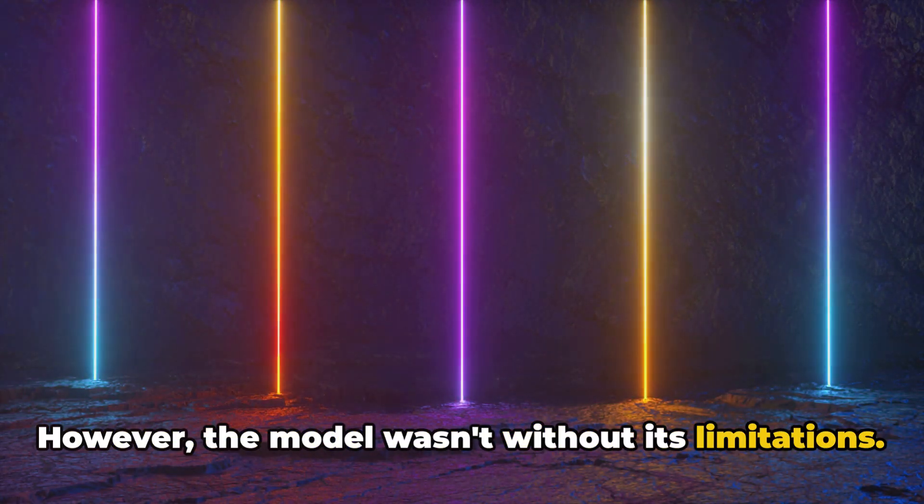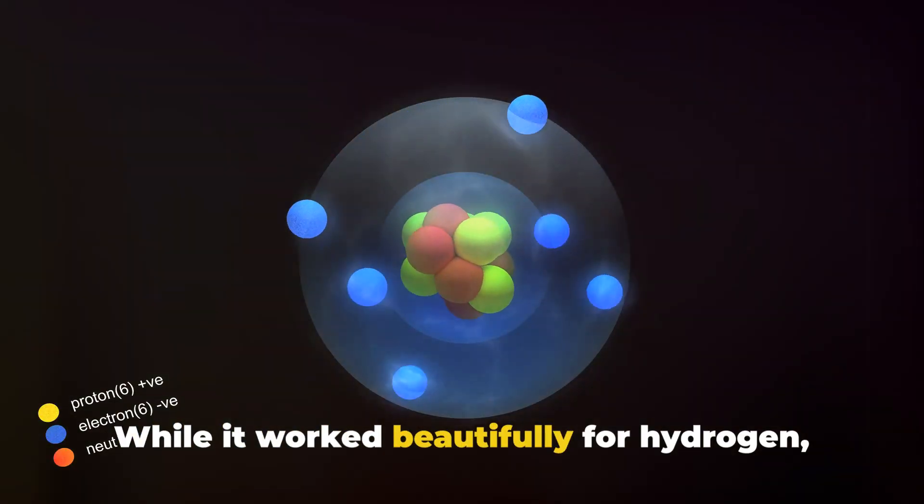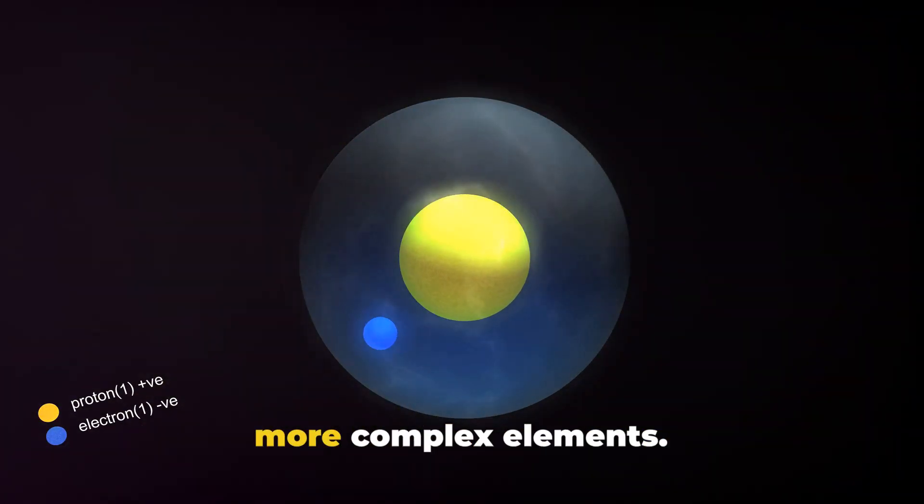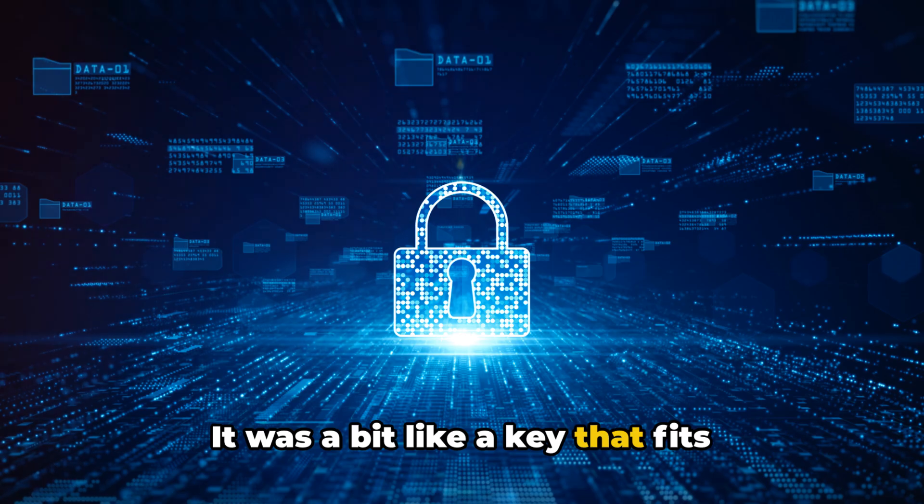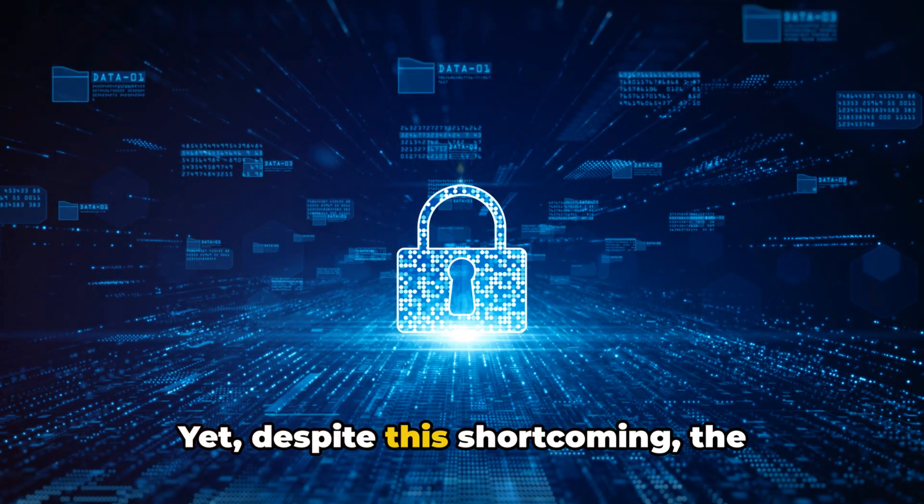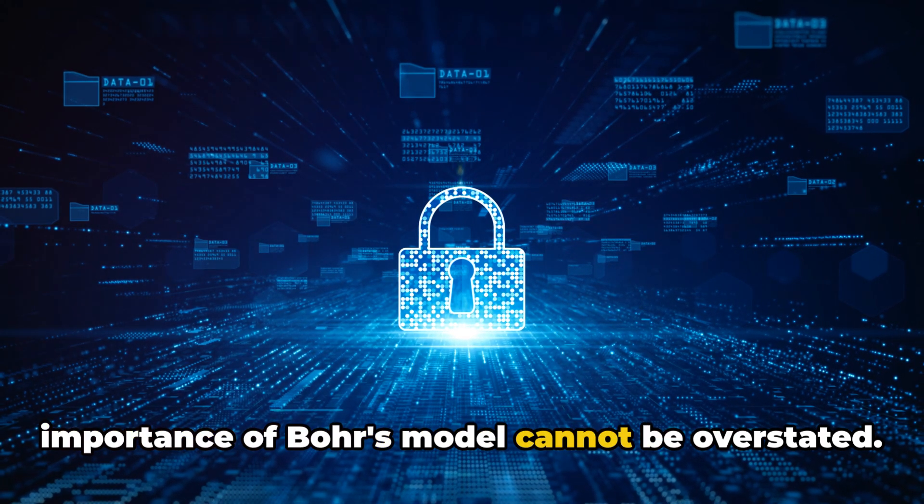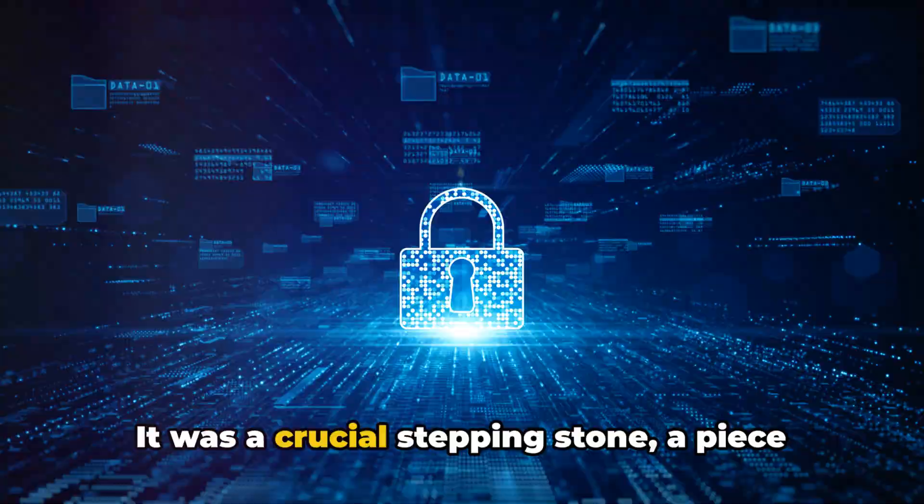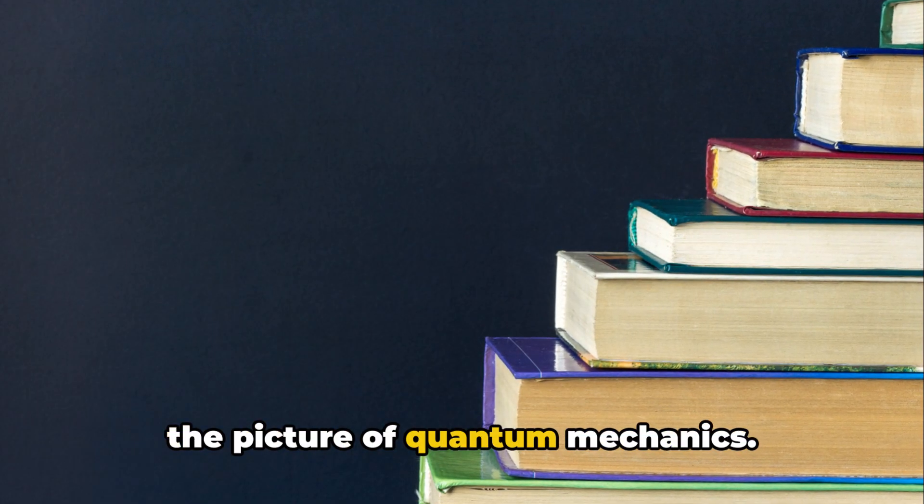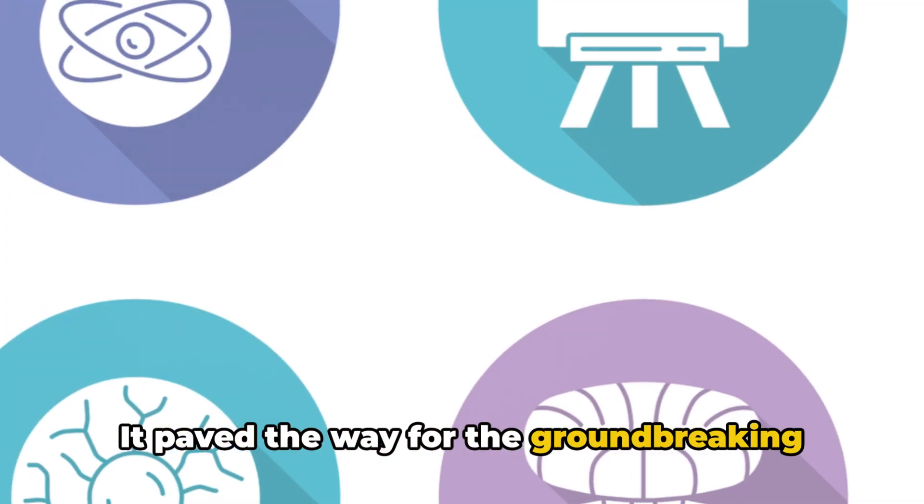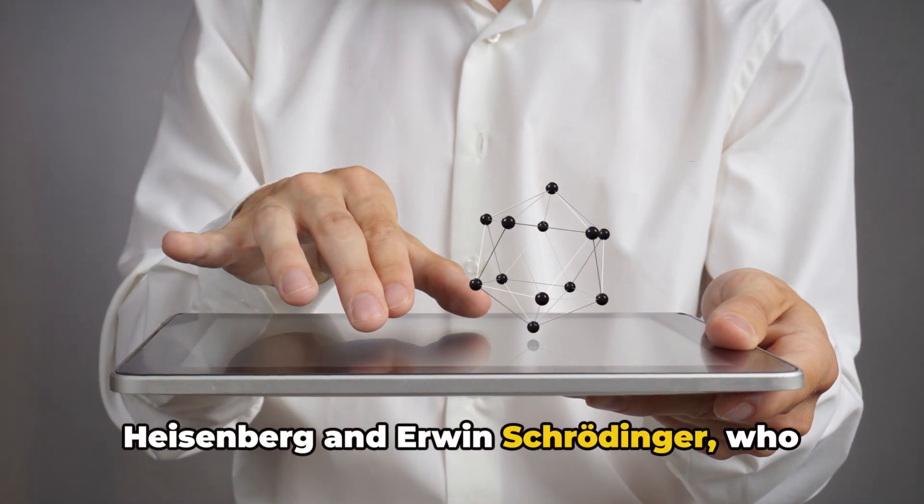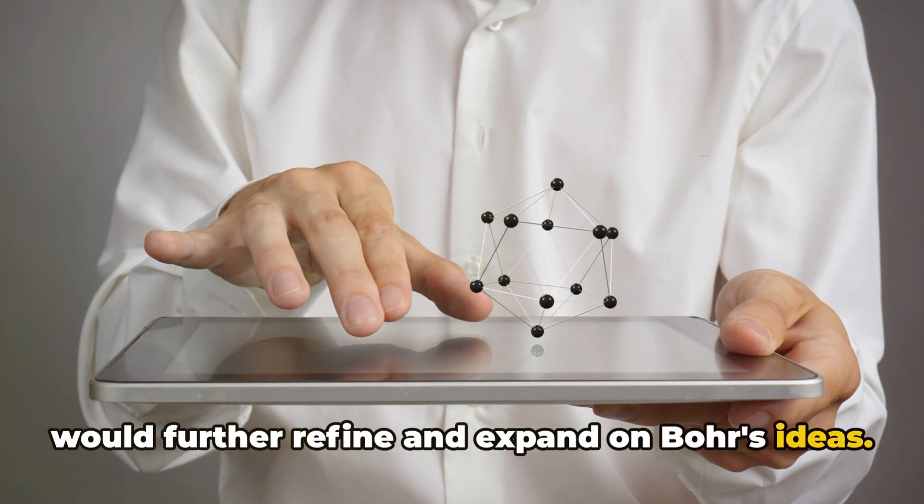However, the model wasn't without its limitations. While it worked beautifully for hydrogen, the simplest of all elements, it stumbled when it came to explaining the spectra of more complex elements. It was a bit like a key that fits perfectly into one lock, but fails to open any others. Yet, despite this shortcoming, the importance of Bohr's model cannot be overstated. It was a crucial stepping stone, a piece of the puzzle that would eventually form the picture of quantum mechanics. It paved the way for the groundbreaking work of other physicists, such as Werner Heisenberg and Erwin Schrödinger, who would further refine and expand on Bohr's ideas.